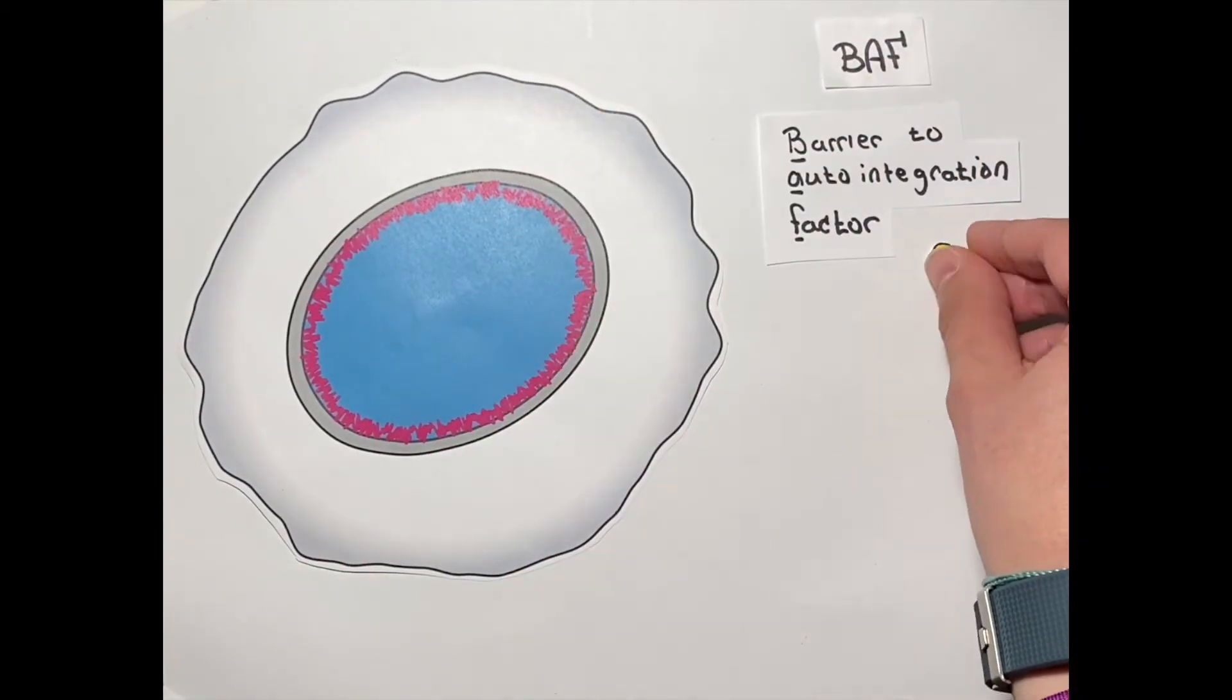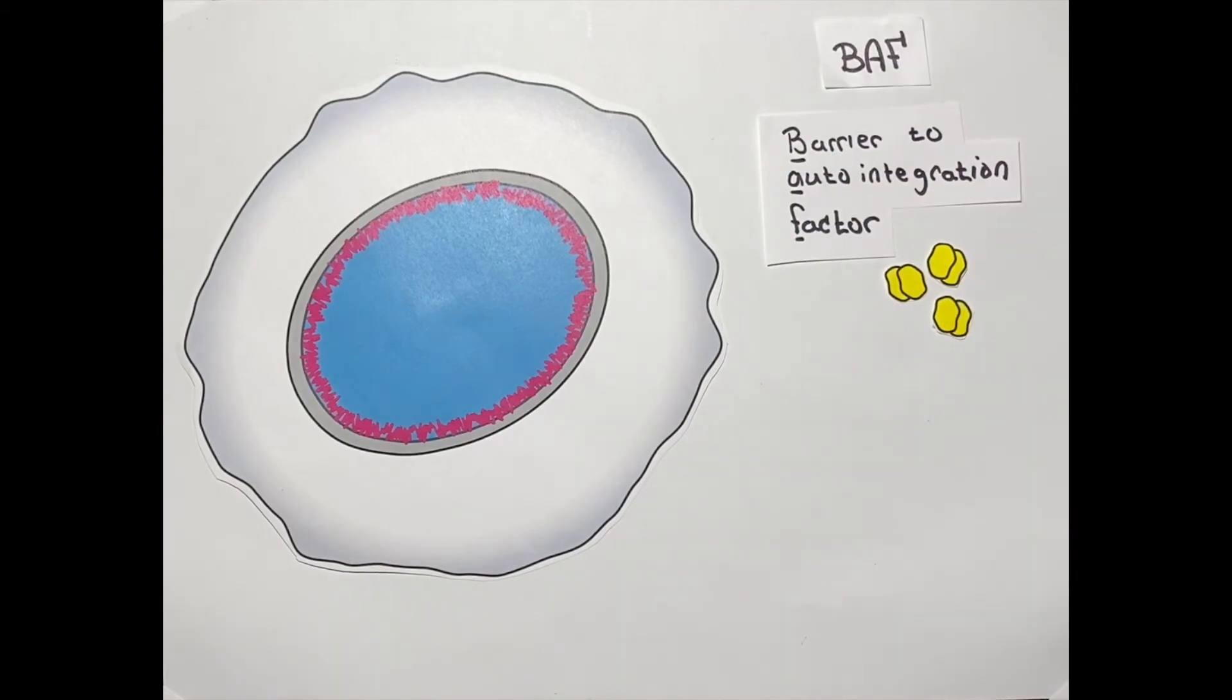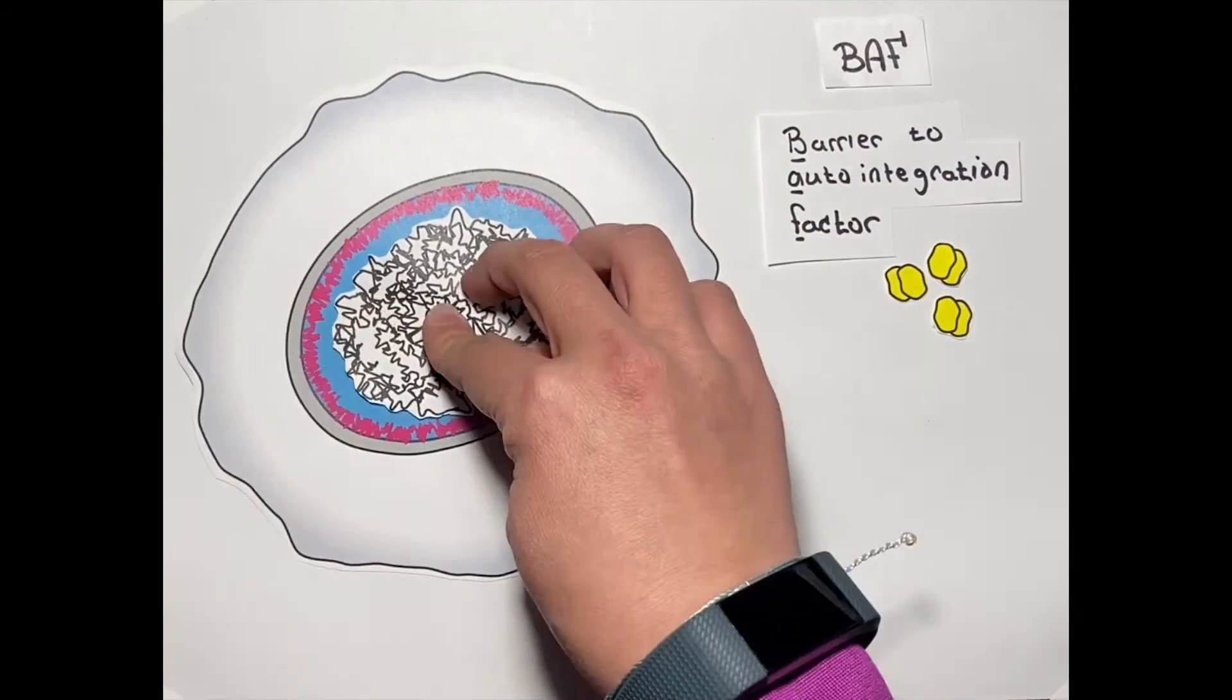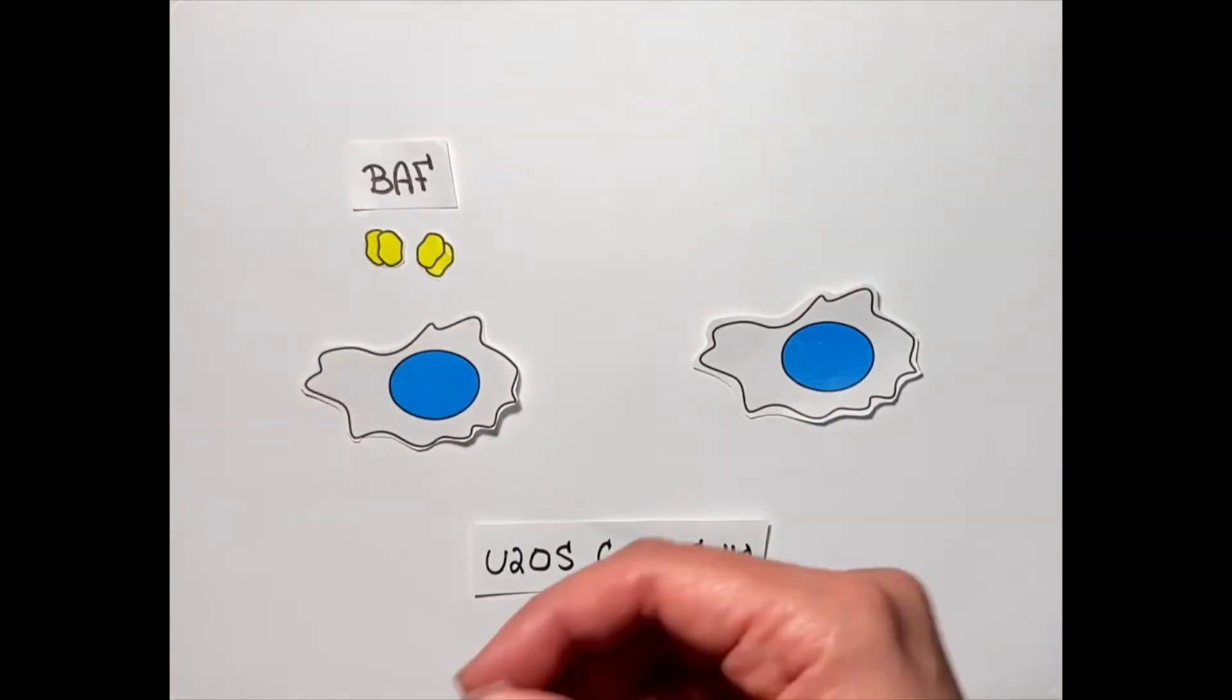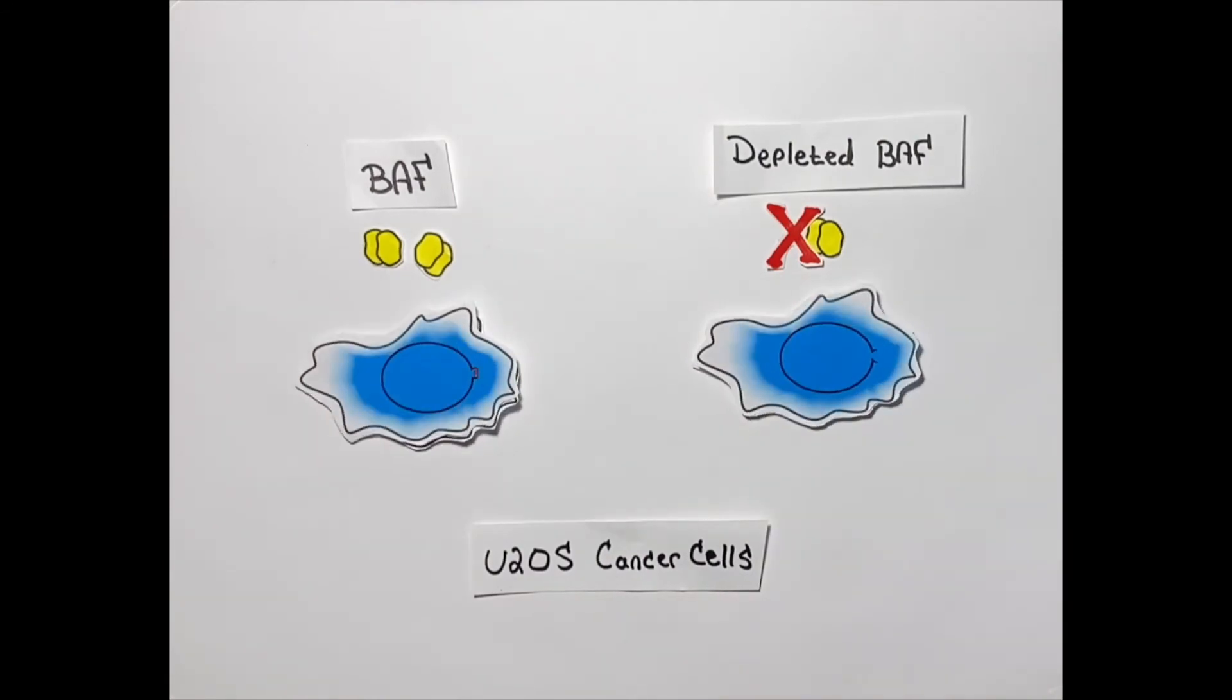One of the proteins cells use to construct the nuclear membrane is BAF. BAF binds both to DNA and nuclear envelope proteins. When we depleted BAF protein from cancer cells, we found that ruptures persisted for longer.